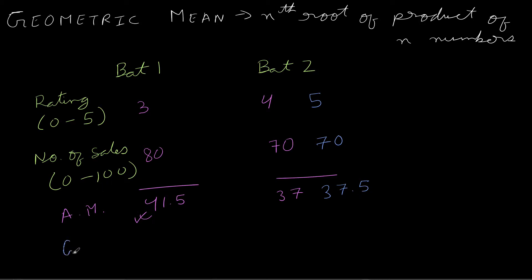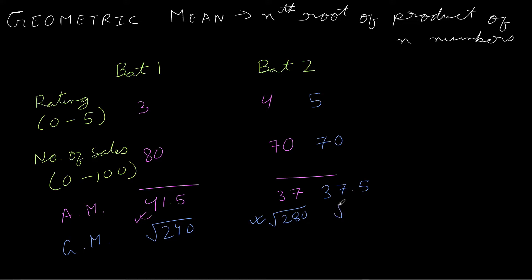Now let's see what happens if we use geometric mean. For bat one: √(80 × 3) = √240, and for bat two: √(4 × 70) = √280. Since √280 > √240, we would choose bat two because of its higher rating. Similarly, if bat two's rating were 5, the geometric mean would be √(5 × 70) = √350, which is even higher. So with geometric mean, the rating makes much more meaningful contribution to our final decision.